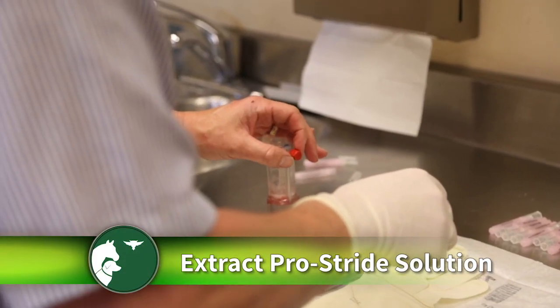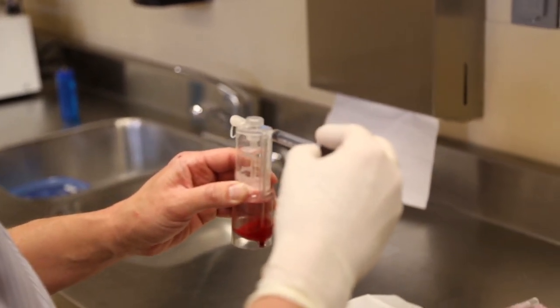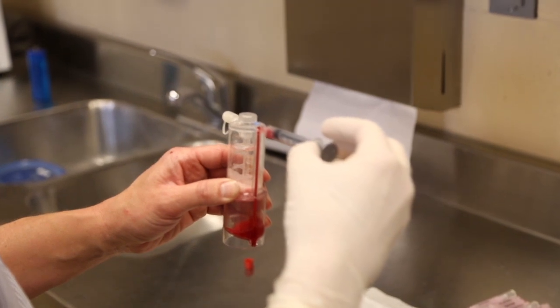Remove the red cap, number 2, and connect a 5 or 10 ml syringe you will use to inject. Extract the solution into the syringe, then disconnect from the device.